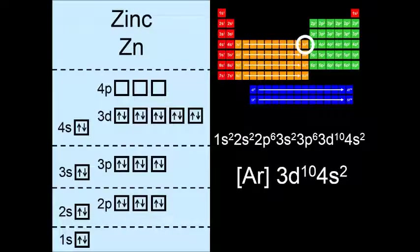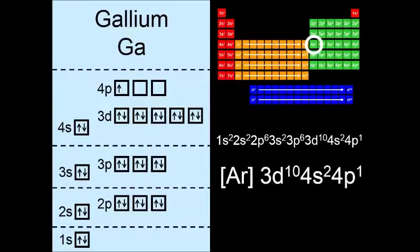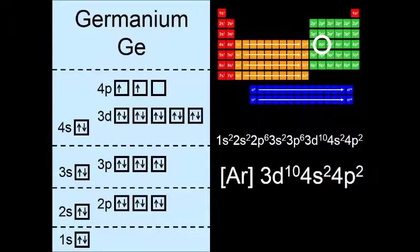So now that we're done with the 3d sublevel, we get to move on to the 4p sublevel. And that would be from gallium to krypton. So there's gallium. 4s2 4p1 is how that ends. And germanium.